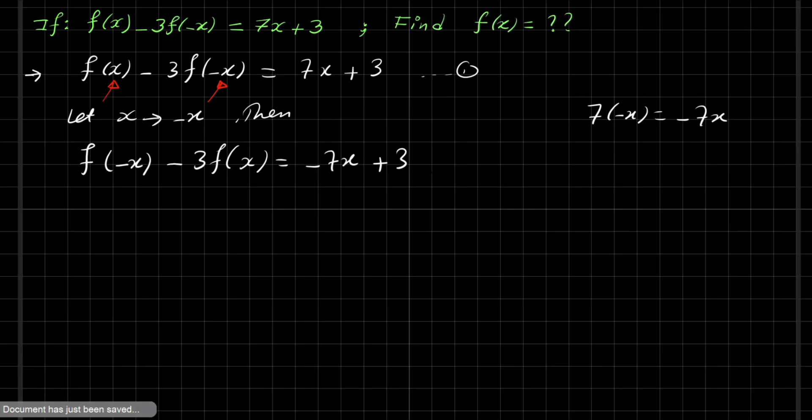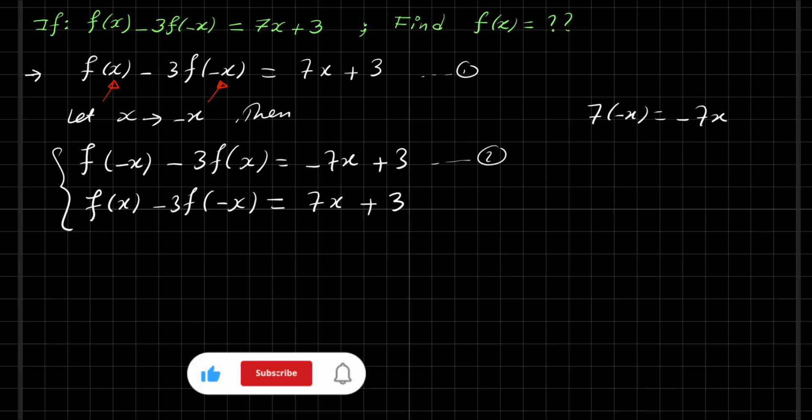And now we have, let's rewrite equation 1 again. Here we have f of x minus 3 f of minus x equal 7x plus 3. So we have a system of equations here. We need f of x, the function of x, the expression for f of x.